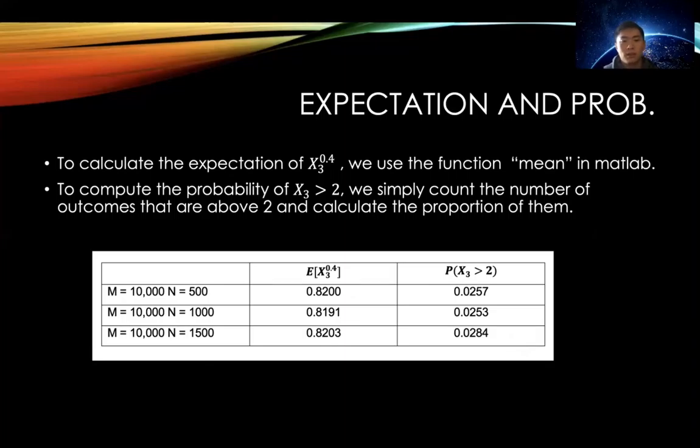For the probability part, we simply counted the number of outcomes that are above two and calculate the proportion of them. Here's the result. We created a table here with the expectation and the probability for three different combinations of M and N.